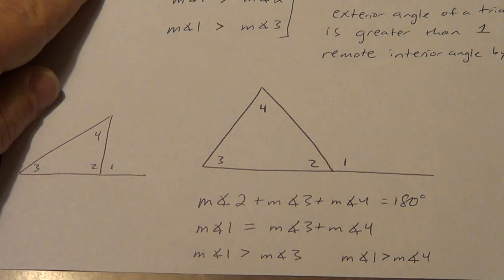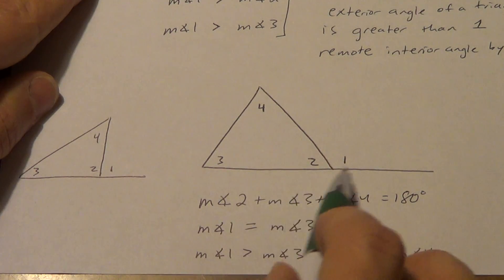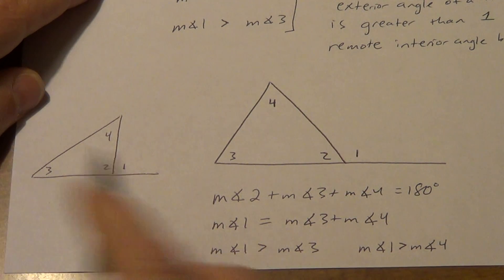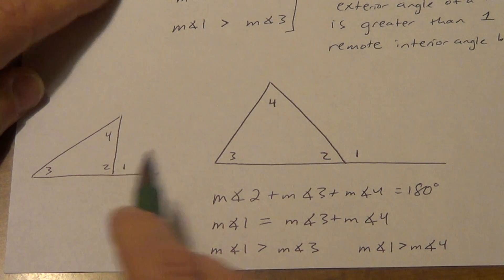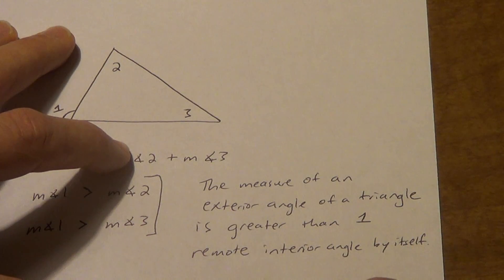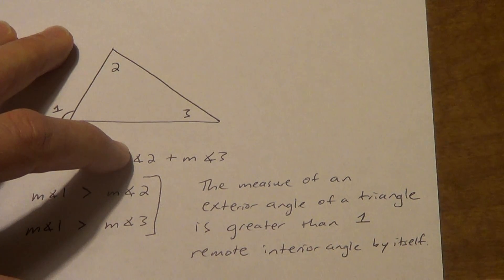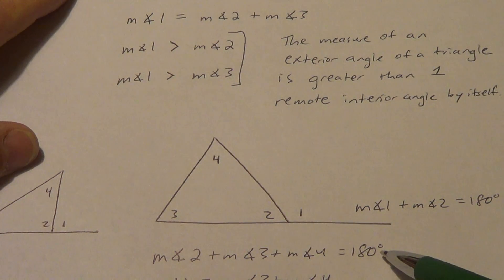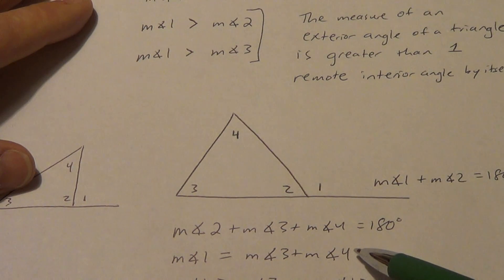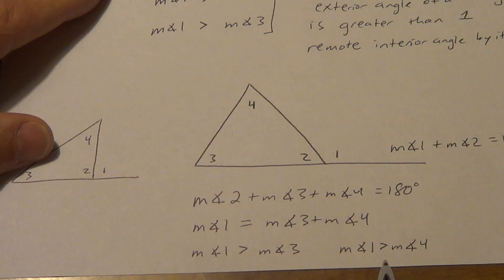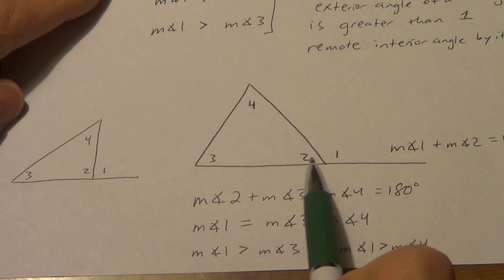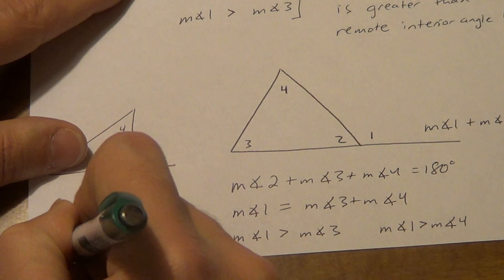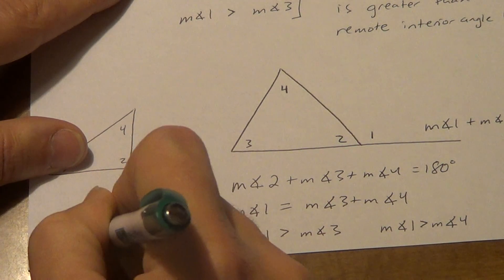There is one thing we do know about angle one and angle two: remember our linear pair postulate. Angle one and angle two are a linear pair — they're still a linear pair in any orientation. So angle one and angle two have to be supplementary, which means they add to equal 180 degrees. So to review: linear pair postulate, triangle sum theorem, exterior angle theorem — these are all review. The two new things are angle one greater than angle three, and angle one greater than angle four. Do not tell me angle one is greater than or less than angle two just because it looks that way.